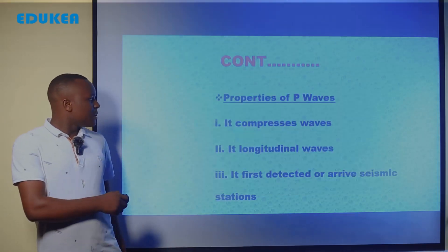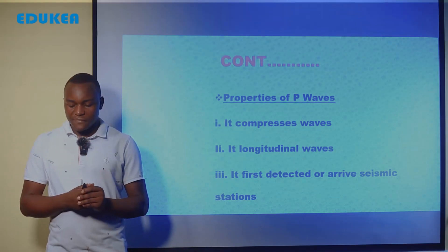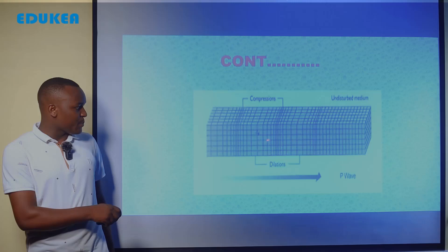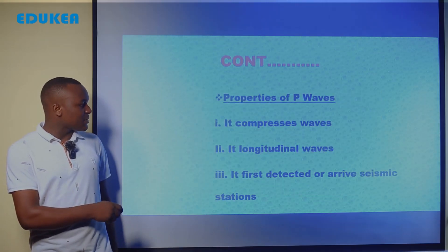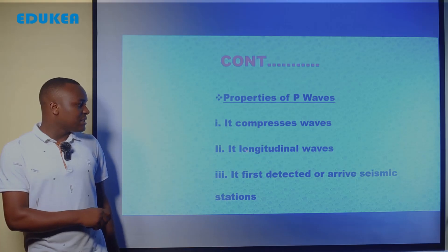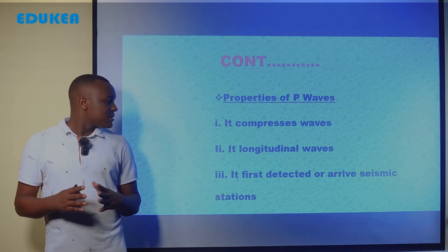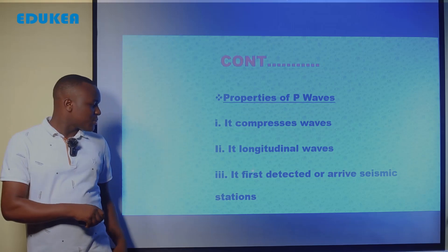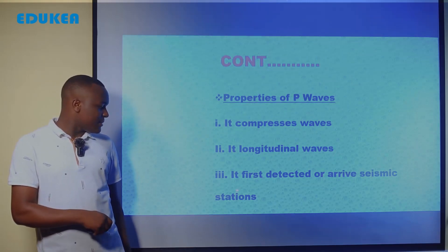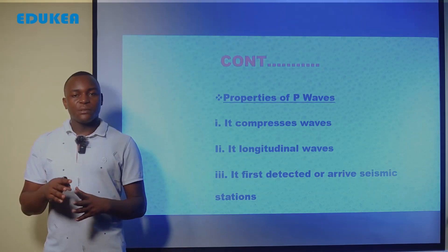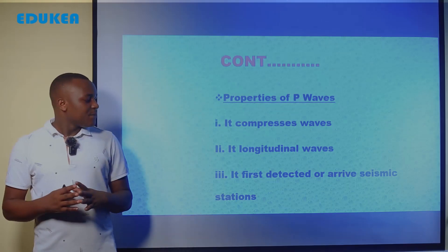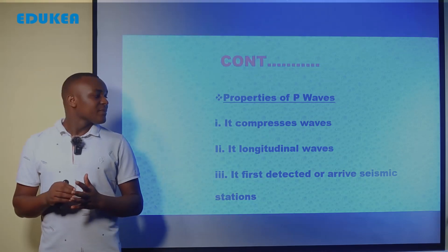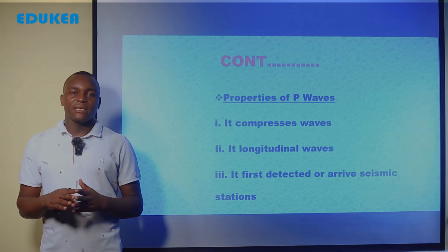Now let's see the properties of primary waves. We say that primary waves are compressional waves. They are also longitudinal waves — primary waves are an example of longitudinal waves. But also, they are the first to be detected or to arrive at the seismic station, which is the station where the occurrence of an earthquake is detected.